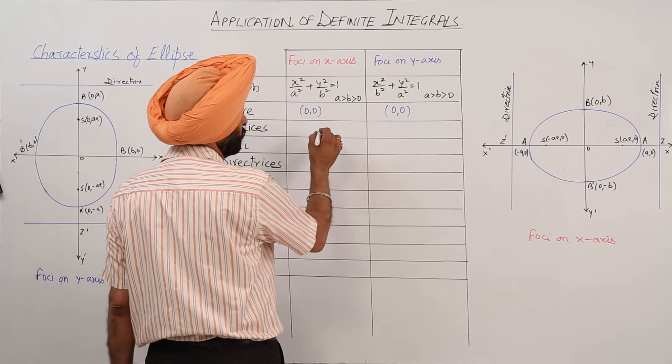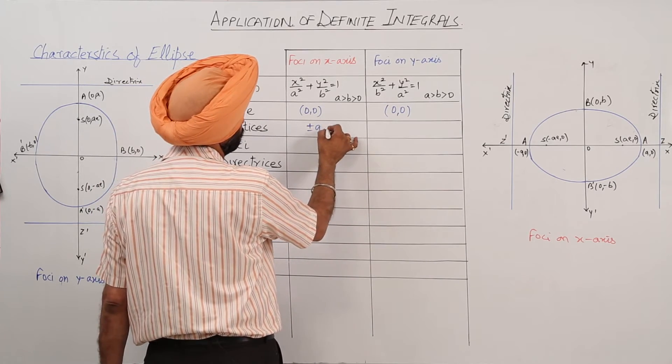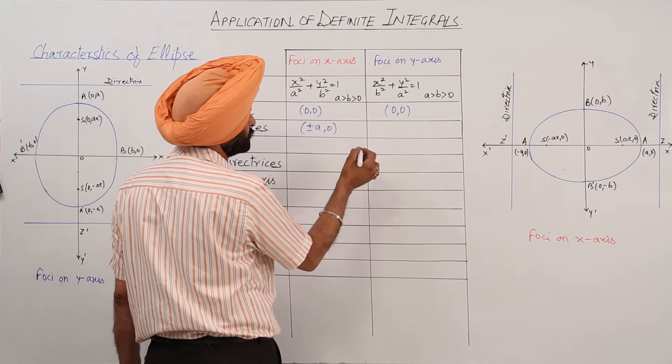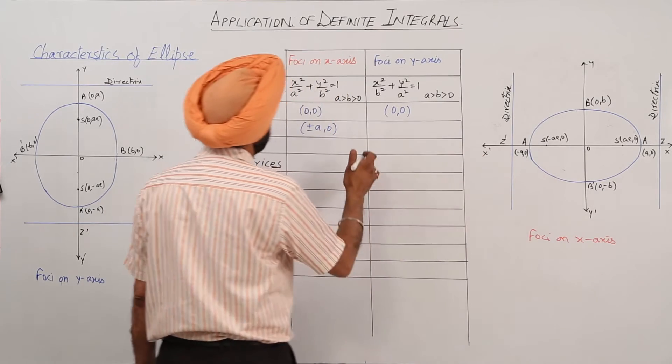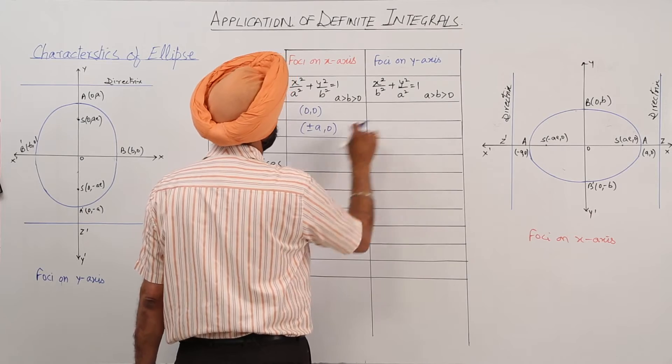Vertices: here the vertices is plus minus a, 0, or we can say that a is the vertex. This is only for this part.